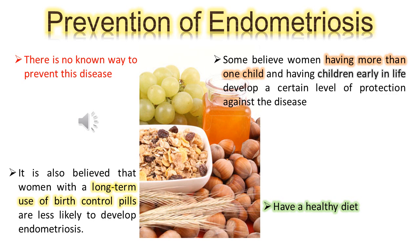There is no known way to prevent endometriosis. Some believe women having more than one child and having children early in life develop a certain level of protection against the disease. It is also believed that women with long-term use of birth control pills are less likely to develop endometriosis. Having a healthy diet may also help.